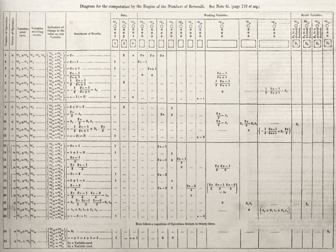Algorithms are essential to the way computers process data. Many computer programs contain algorithms that detail the specific instructions a computer should perform in a specific order to carry out a specified task, such as calculating employees' paychecks or printing students' report cards. Thus, an algorithm can be considered to be any sequence of operations that can be simulated by a Turing-complete system.